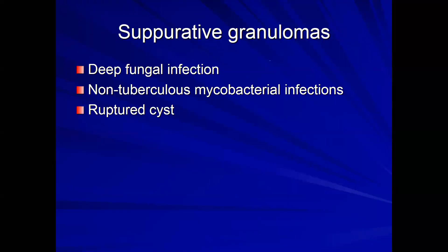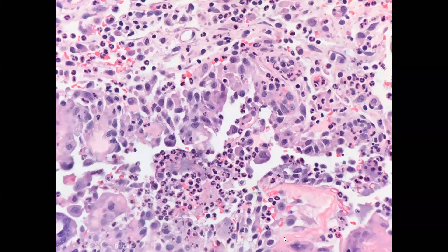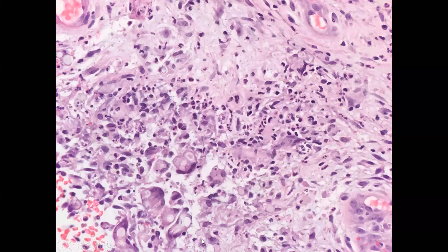Finally, suppurative granulomas — if it is not a ruptured cyst (the most common cause), think infection first until ruled out: either deep fungal or non-tuberculous mycobacterial infections. Here in the dermis is a dense collection of inflammatory cells — histiocytes filled with neutrophils. On closer inspection, you start to see little round shapes that are the cell walls of blastomycosis. These infection patterns will be covered in more detail in the infections chapter; the goal here is to identify the granuloma patterns.